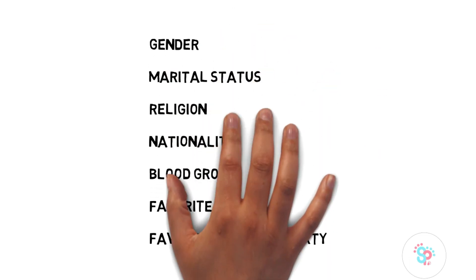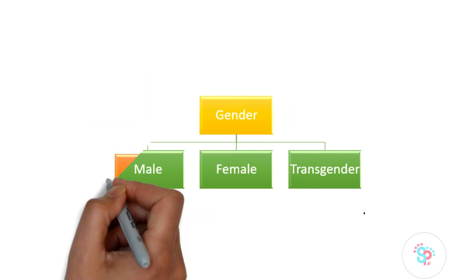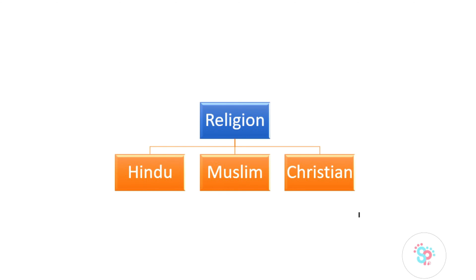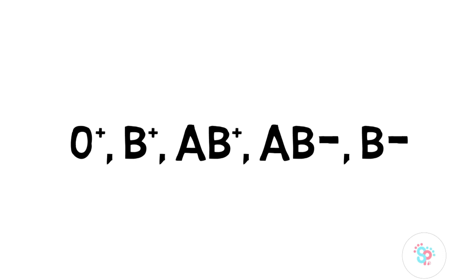For the category, you can take gender, marital status, religion, nationality, blood type, favorite color, favorite political party, etc. All these variables are nominal variables, from name and phone number all the way to favorite political party. Please note that all the examples in the category — gender, marital status, religion, and so on — have categories within them. Categories of gender would be male, female, transgender. For religion it may be Hindu, Muslim, Christian. For blood type it may be O positive, B positive, AB negative, B negative, and so on. All the variables discussed are nominal in nature.